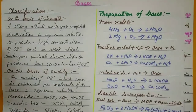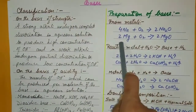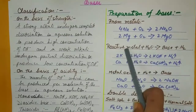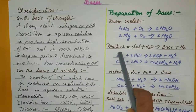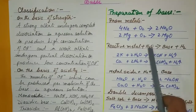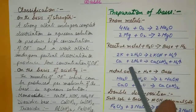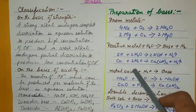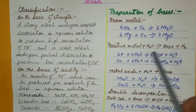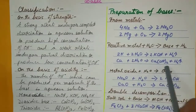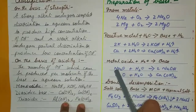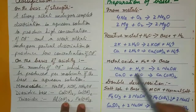Now for preparation. From metals directly: metal plus oxygen gives metallic oxide — sodium and oxygen gives sodium oxide. A reactive metal with water: potassium with water gives potassium hydroxide and hydrogen. Calcium and water also gives calcium hydroxide and hydrogen. Metallic oxide and water: sodium oxide and water gives sodium hydroxide; calcium oxide and water gives calcium hydroxide.